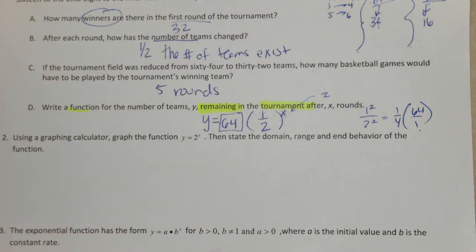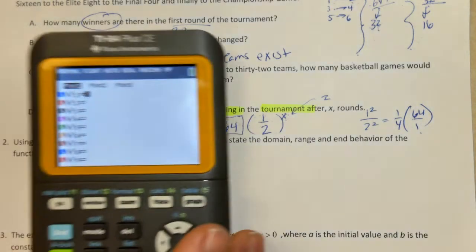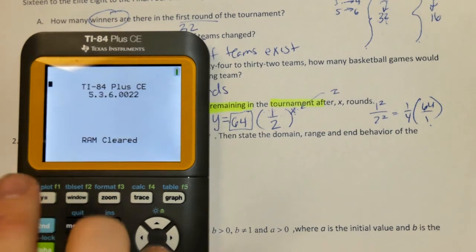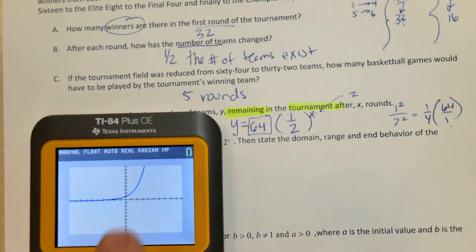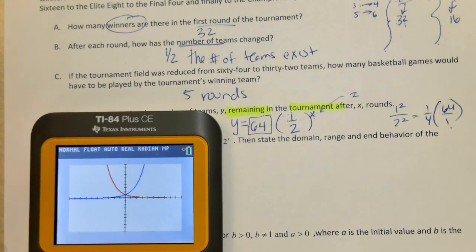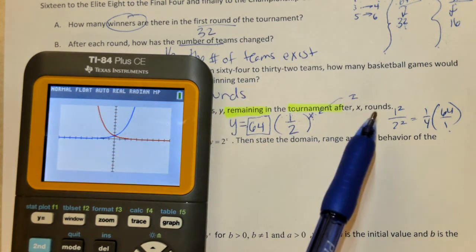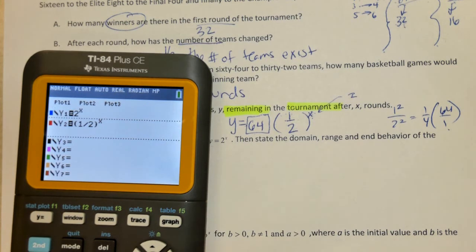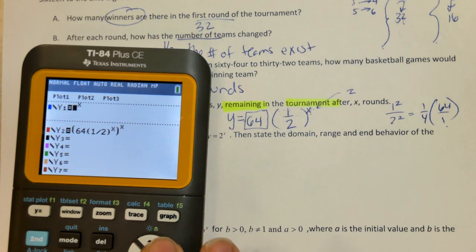Use a graphing calculator to graph this function, then state the domain and range. Notice that this is different from what we have. I'm going to substitute in 2 to the X — and I've heard some of you describe this as a J-curve from freshman year. This is 2 to the X. Now, we don't have that — we have 1 half raised to the X. This red function is going to tell us the number of teams remaining after a specific amount of rounds. For our particular problem, we have 64 out front, 1 half, raised to the X.